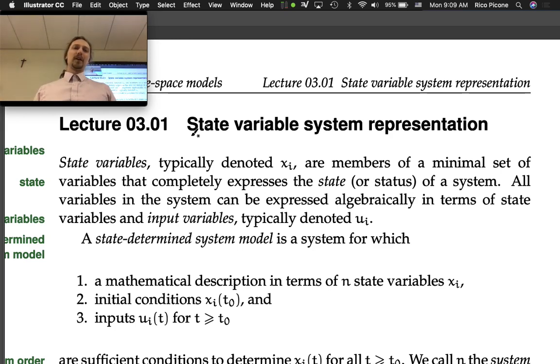State variable system representation, Lecture 3.1. State variables, typically denoted x_i, are members of a minimal set of variables that completely expresses the state or status of a system. All variables in the system can be expressed algebraically in terms of state variables and input variables, typically denoted u_i.